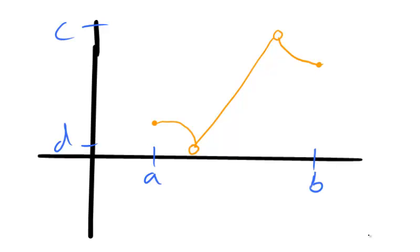This function has two removable discontinuities, and no absolute extreme values. If the holes in the function were filled, then the function would have absolute extrema.